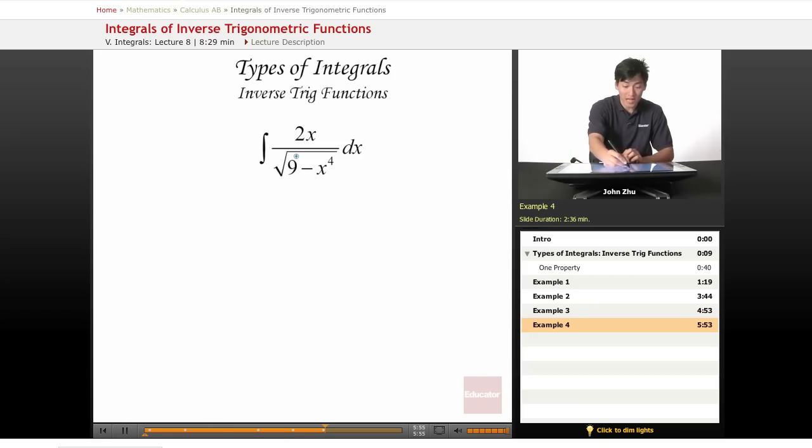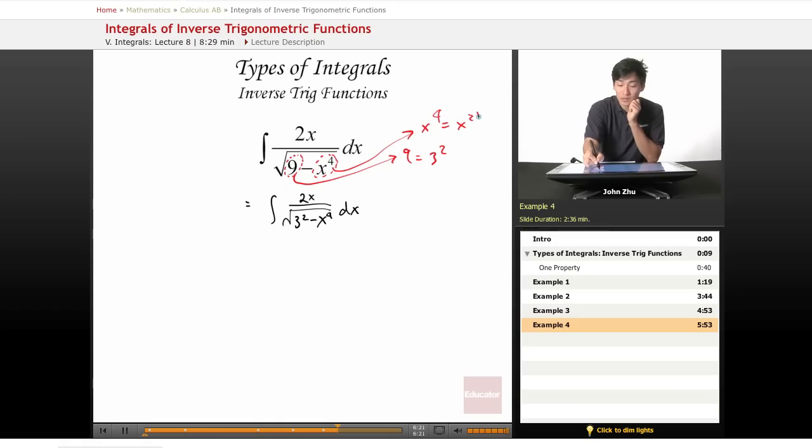The next one - right away we see this 9, so let's go 9 equals 3 squared. So this is 2x over square root of 3 squared minus x to the 4. Well, x to the 4 is not really squared, but we know that x to the 4 happens to be x squared squared.